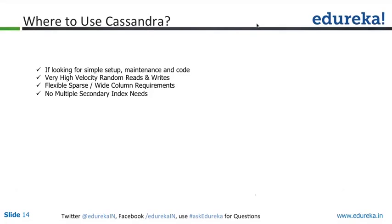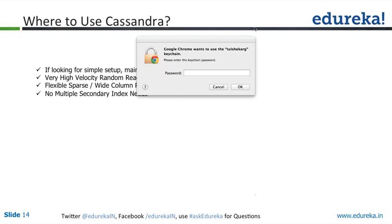Cassandra does support secondary indexes, but when you bring in secondary indexes, the internal overhead becomes so high that overall performance comes down. The more secondary indexes you use, the less the performance. You can use Cassandra where you have fewer secondary indexes, want a very simple setup and maintenance, very high velocity of random reads and writes, and wide column requirements — all of which are very fitted to time series data where consistency is not critical.